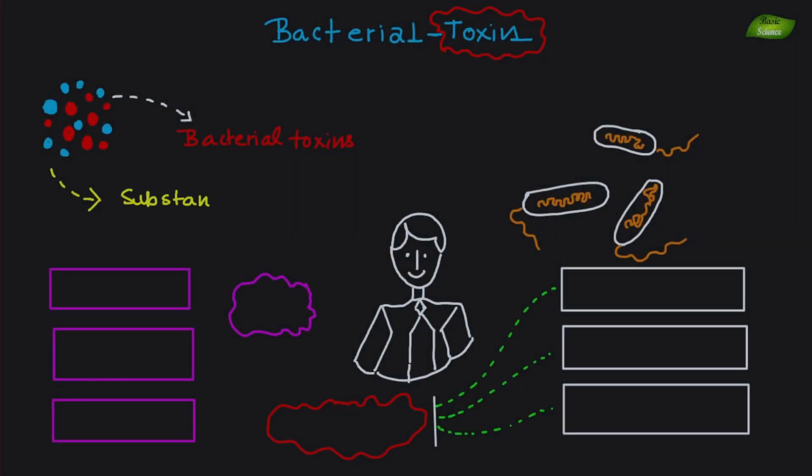Bacterial toxins are potent substances produced by bacteria that can cause significant harm to host organisms. These toxins are categorized based on their origin, structure, and mechanism of action.